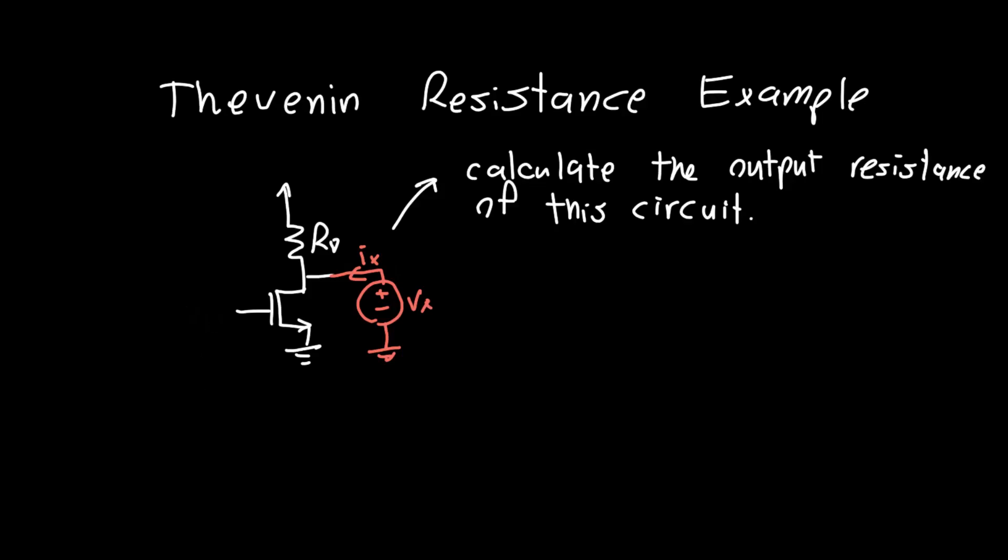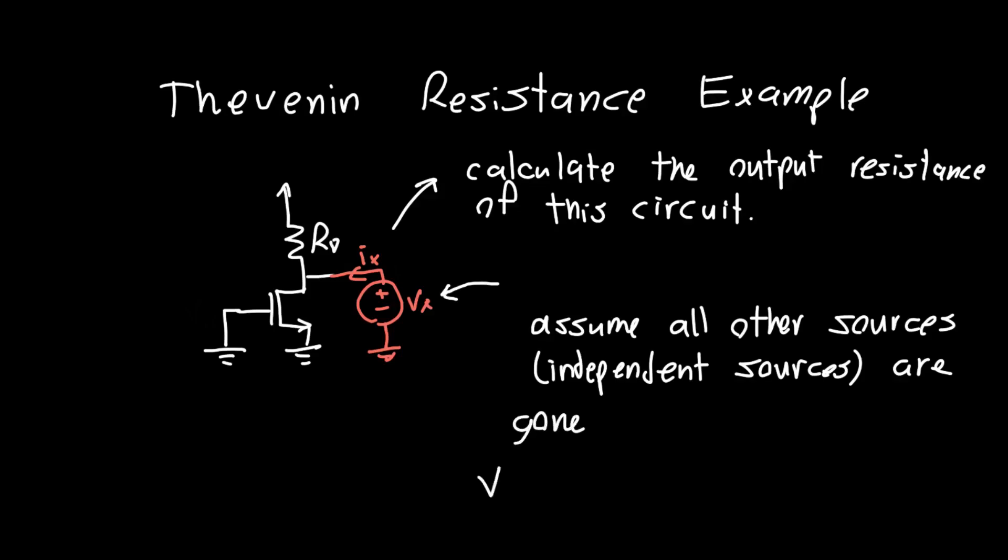The answer is we ignore it. We say that we are only interested in the Thevenin resistance when applying some voltage at the output, so we implicitly or explicitly assume all other sources, or independent sources, are gone.